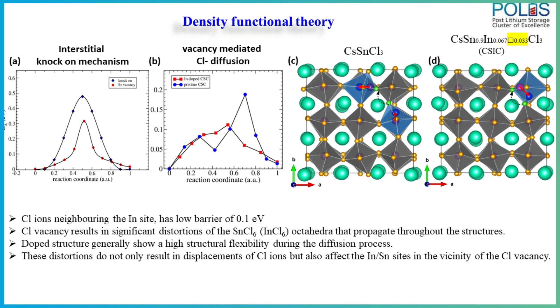The first finding is that we stabilized cesium tin chloride in the cubic phase by substituting indium on the B-site. The second finding, understood through DFT and other techniques, is that this material has a flexible structure: the tin and indium on the B-site undergo transitions during chloride ion diffusion, meaning the stress generated during conduction is compensated by the flexible nature of the tin-indium octahedra.